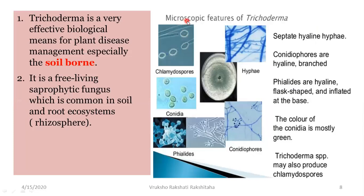Now let us look into the microscopic features of Trichoderma. In this pic you can see that the hyphae of Trichoderma is hyaline and septate. It reproduces by producing conidia — the conidia are oval and uninucleate, produced on conidiophores which are hyaline and branched. Trichoderma also produces thick-walled resistant spores called chlamydospores. It also has phialides that are flask-shaped with an inflated or swollen base. In the center you can see a petri dish with a culture of Trichoderma — it is green in color because it is showing conidia, which are green in color.